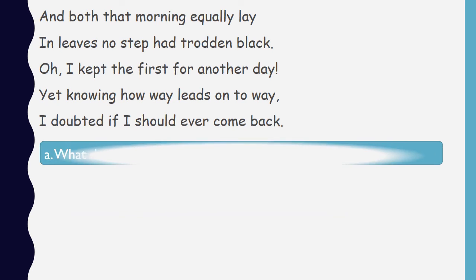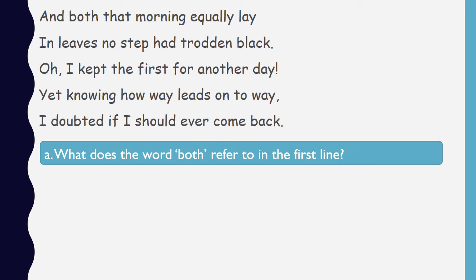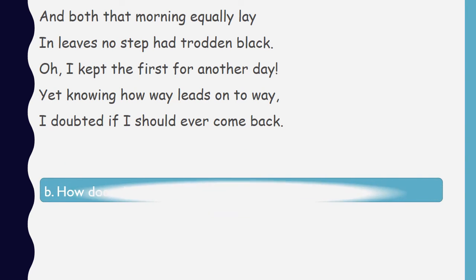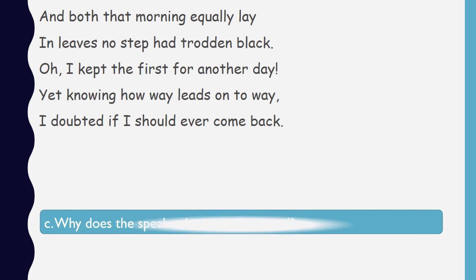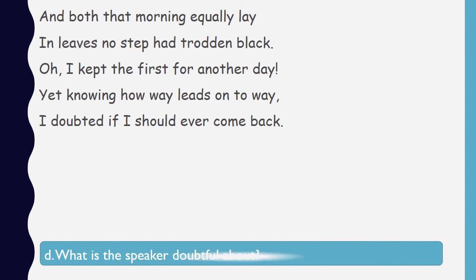Moving to the third stanza. What does the word 'both' refer to in the first line? How do the two roads appear that morning? Why does the speaker leave the first road? What is the speaker doubtful about? Check out the last two lines of this stanza again and see if you can figure out the answer.